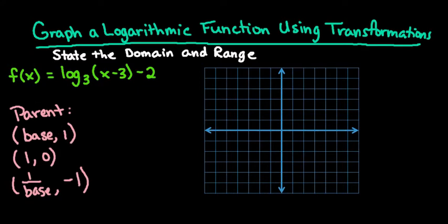The base is the value written as a subscript. This 3 here is our base, so the parent function goes through the points (3, 1), (1, 0), and (1/3, -1).